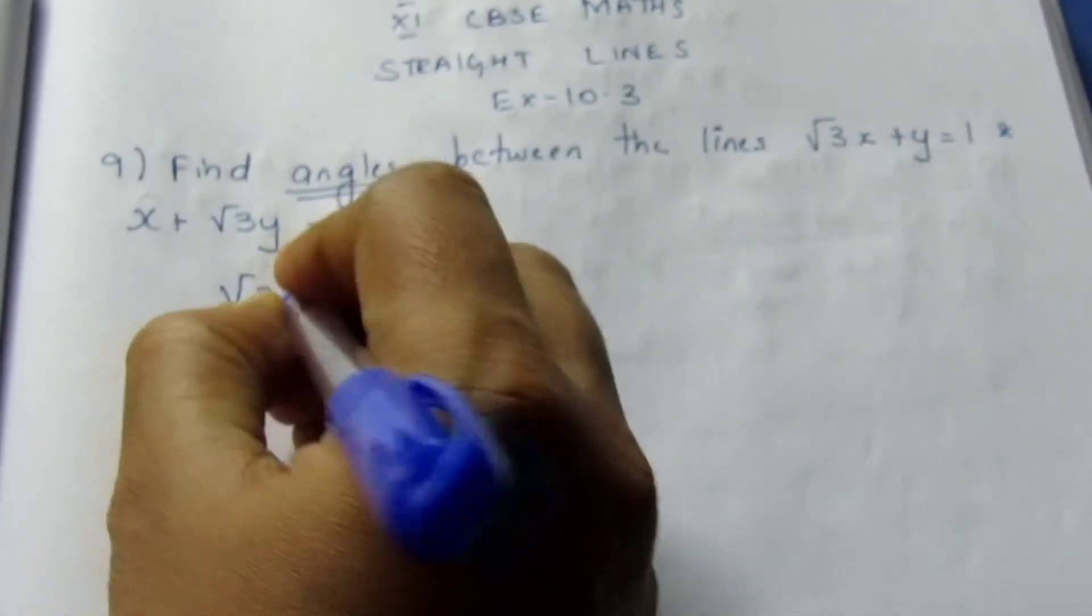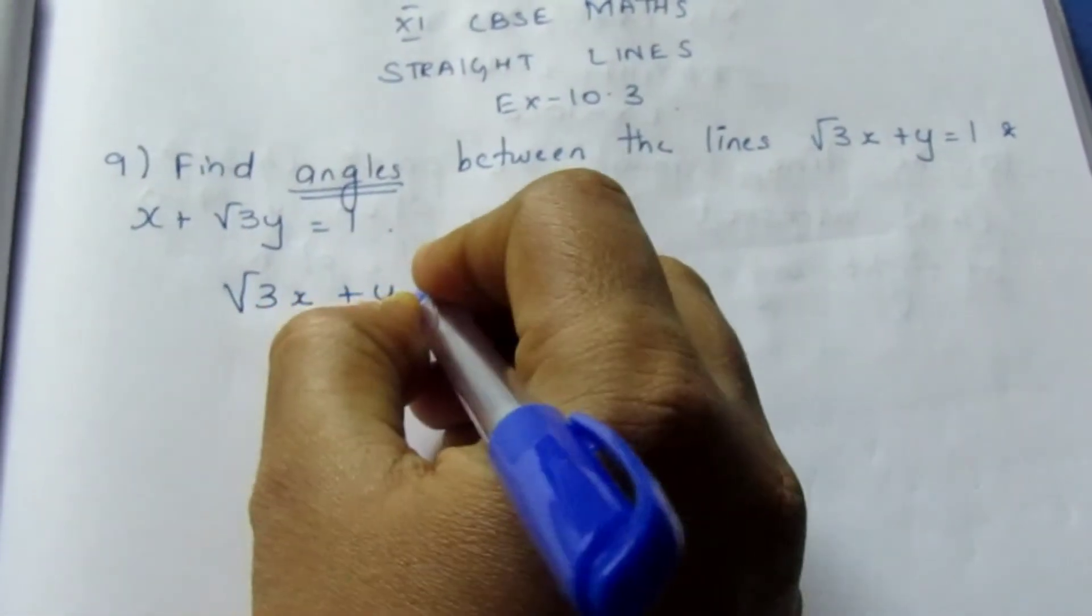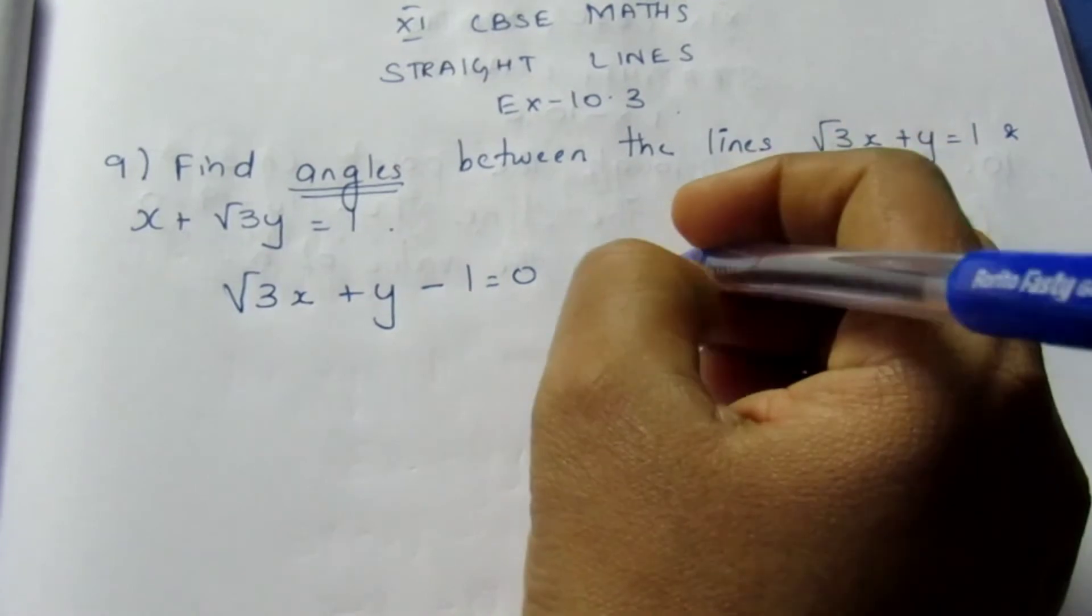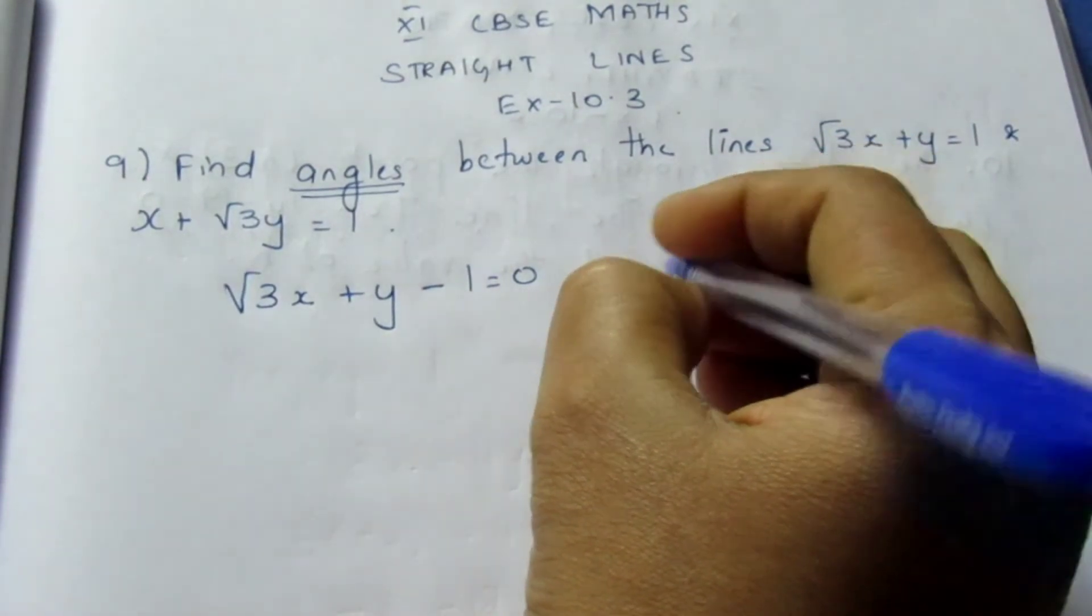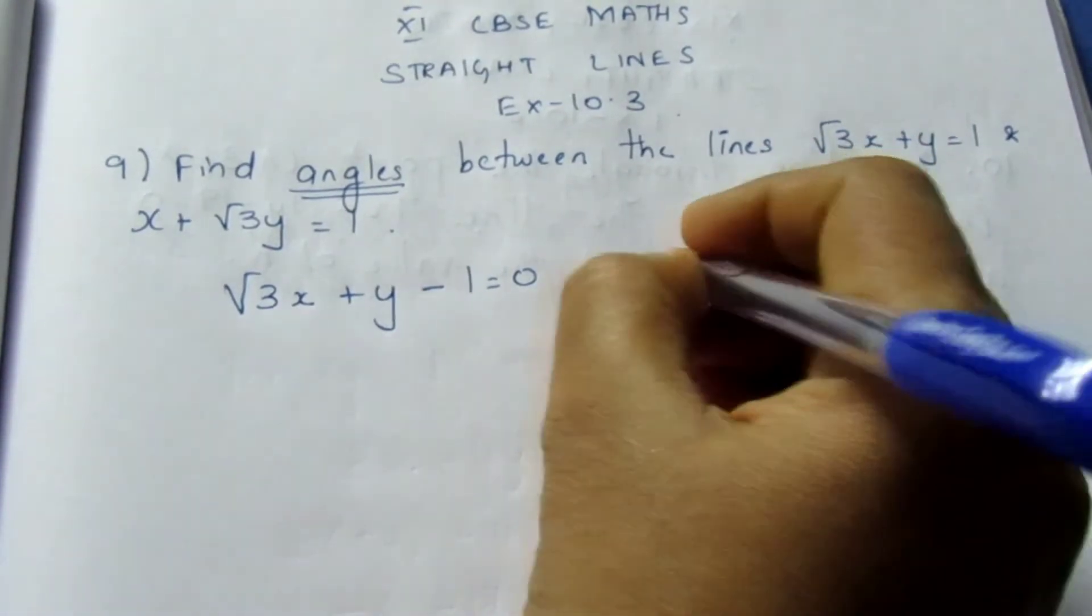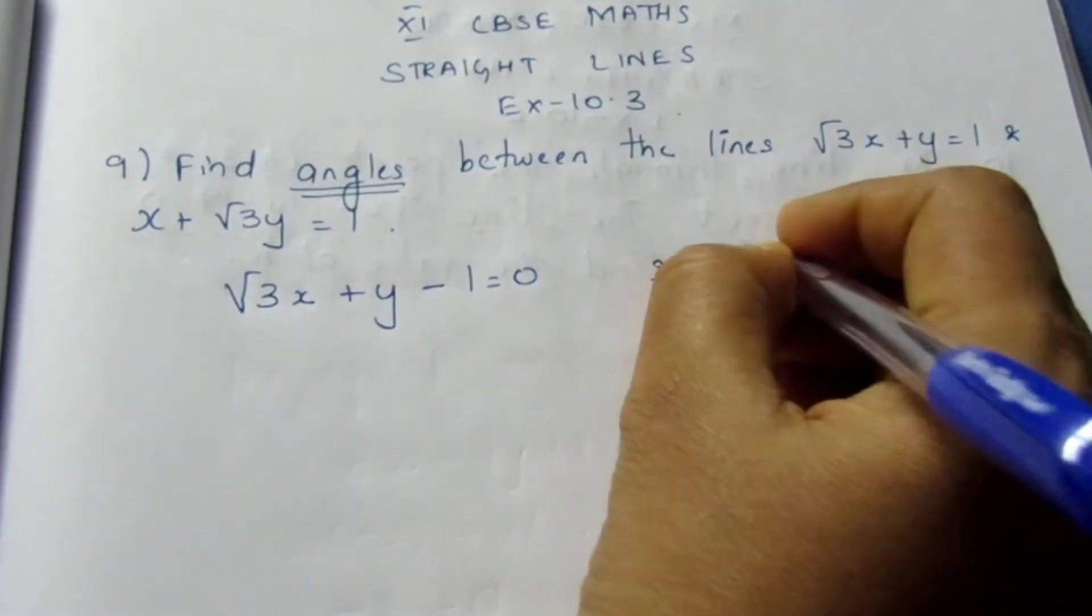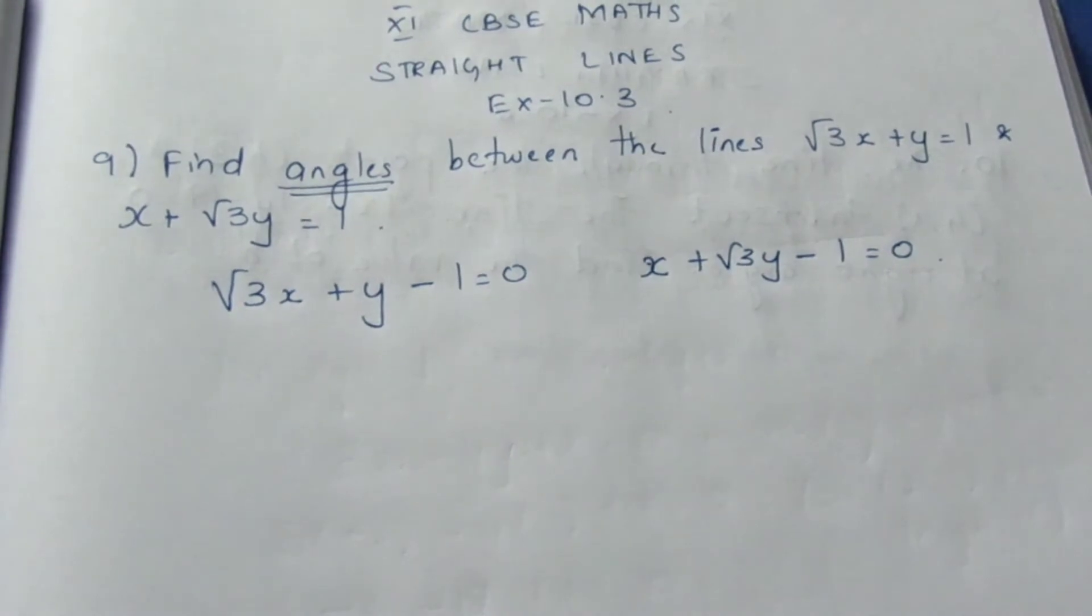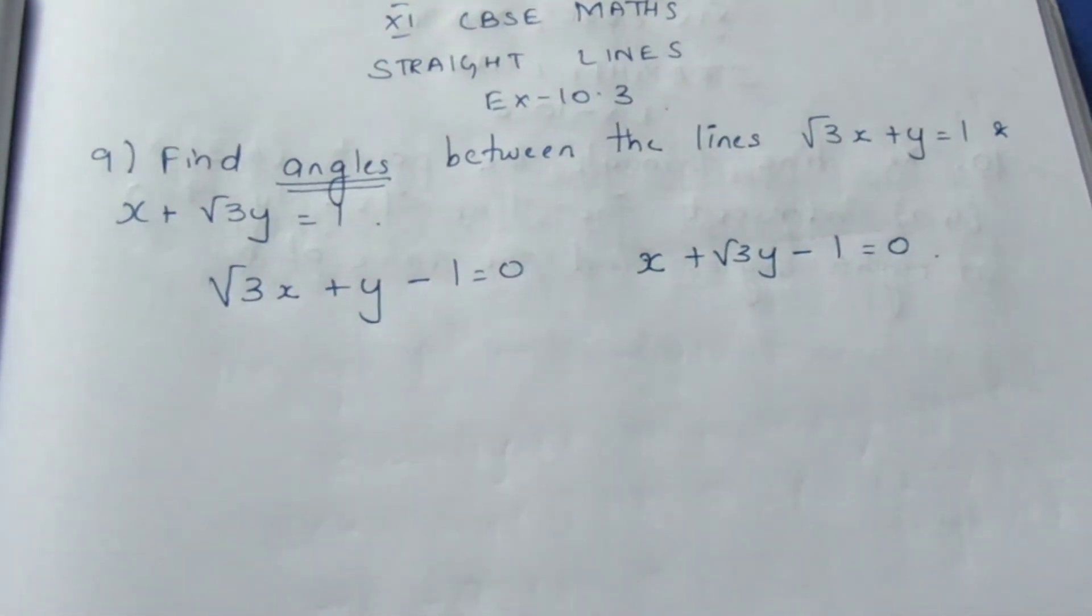The two equations are √3x + y - 1 = 0. Let me take it inside. Here x + √3y - 1 = 0. These are the two values we have found.